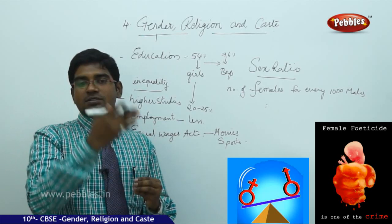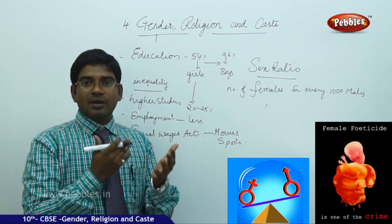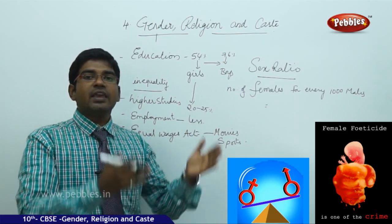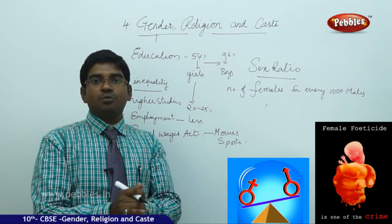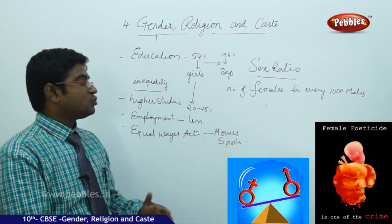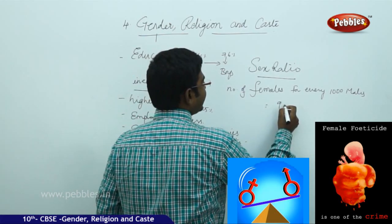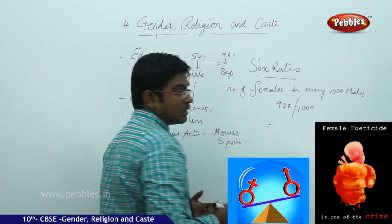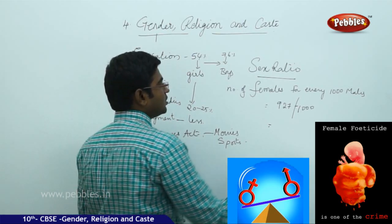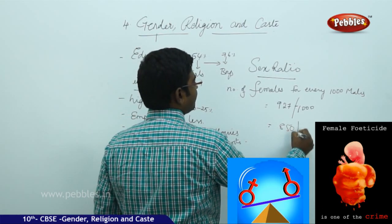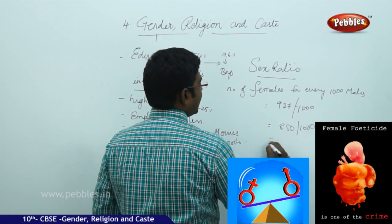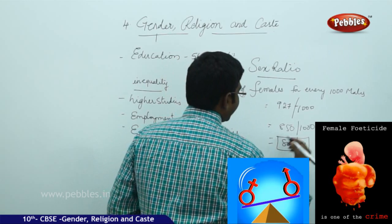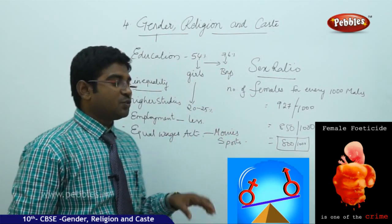The number earlier used to be nearly 927 per thousand, whereas nowadays it is going down to 850 per thousand. And later on it fell down. Now in the present calculation it is 800 per thousand. The situations are turning worst. Things are becoming very drastically changing in respect to the girl child's birth.